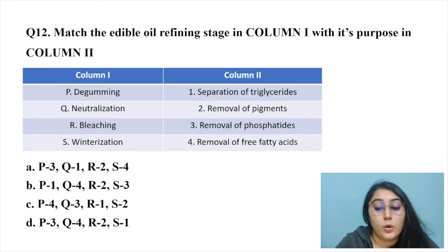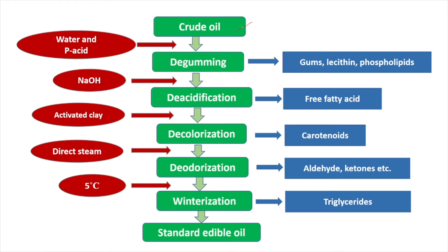The last question matches edible oil refining stages with their purposes. Crude oil extracted from oilseeds by mechanical or solvent extraction undergoes: degumming, de-acidification (neutralization), decolorization (bleaching), deodorization, and winterization. During degumming, water and phosphoric acid are added to hydrate and remove gums, lecithin, and phospholipids.